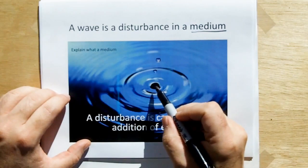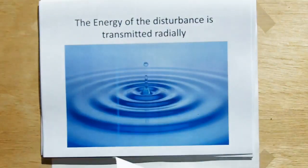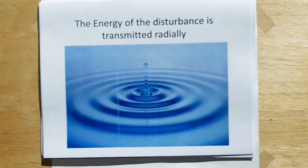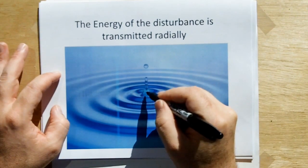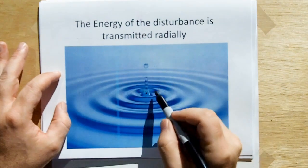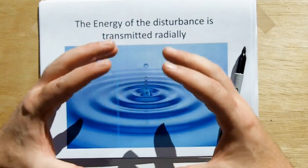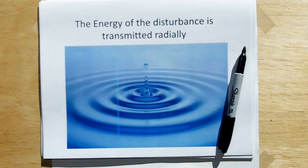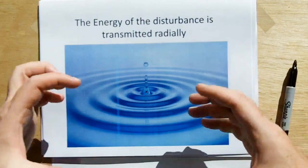And this disturbance is caused by the addition of energy. The energy of the disturbance is transmitted radially. So in other words, when you drop something into the water here, you're going to see energy waves continually spread out from the point of disturbance spherically in air or on the surface of the water as rings.